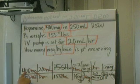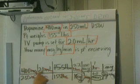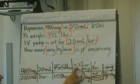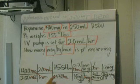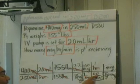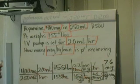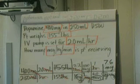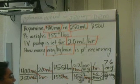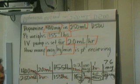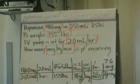Let's go ahead and do the math. Type this in your calculator: 400 times 20, times 2.2, times 1,000, divided by 250, divided by 155, divided by 60 — equals 7.6. So the patient will be receiving 7.6 micrograms per kilogram per minute. Once again, double-check it, do the math once again the same way, and you should get the same exact answer.